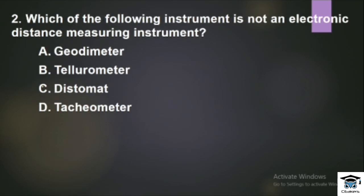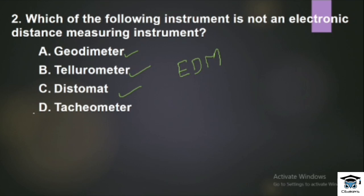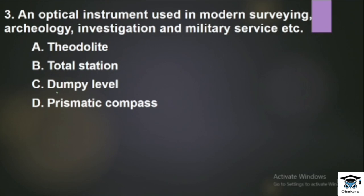Second question: Which of the following instruments is NOT an electronic distance measuring instrument? We call it EDM. The EDM instruments include Geodometer, Tellurometer, and Distormat. The tachyometer is not an EDM instrument. So the tachyometer is the answer — it is a traditional survey instrument, not an EDM.